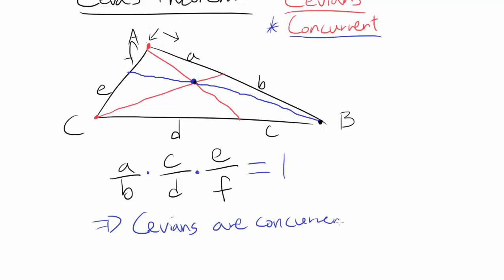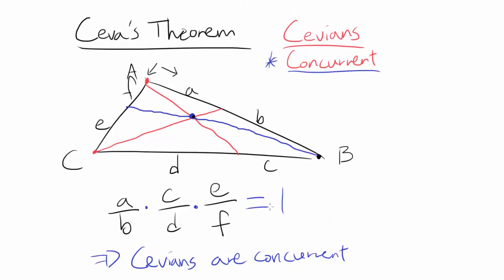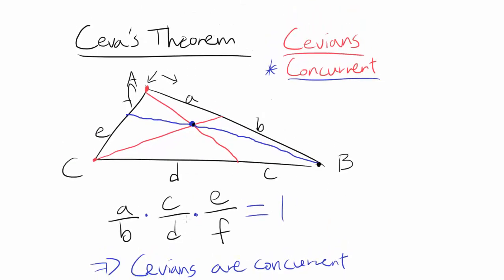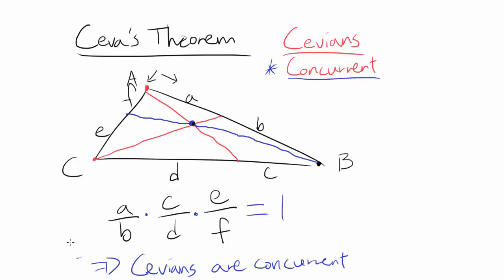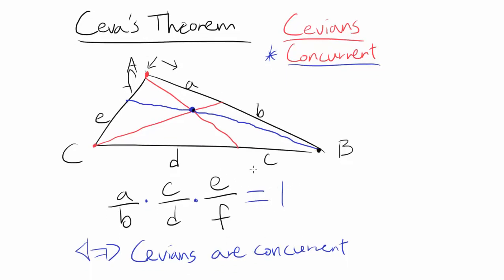And the opposite, the converse is true as well. If cevians are concurrent, a over b times c over d times e over f is going to be one. So this thing works both ways. It's an if and only if theorem, or necessary and sufficient condition.